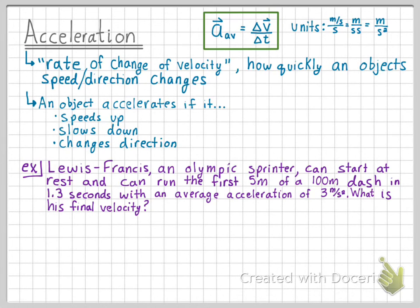We know that our acceleration equation can be expanded to show final velocity minus initial velocity over time. Let's place in our known variables. The acceleration is three meters per second squared, the initial velocity is zero since he starts at rest, and the total time is 1.3 seconds. We want to solve for the final velocity.